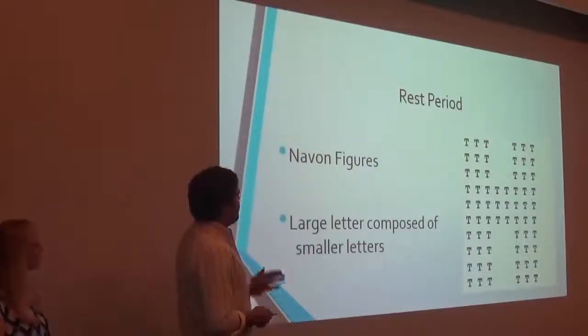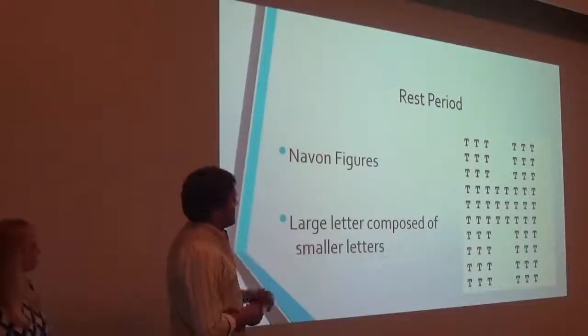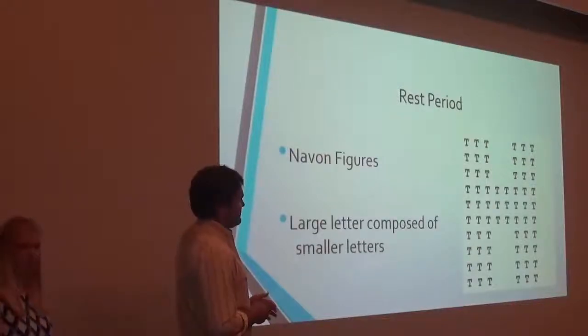And so for the rest period, that involved looking at Navon figures, which is a large letter composed of smaller letters. So in this example here, you can see it's an H made of smaller Ts.